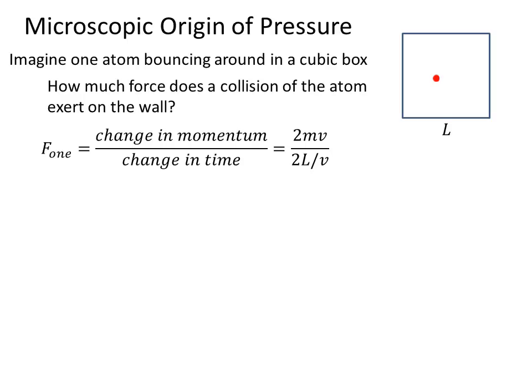And the time it takes to go from one wall to the other wall and back is the length 2L divided by the velocity. So we have the mass times the velocity squared divided by L is the force.